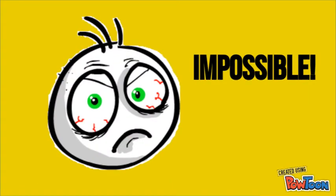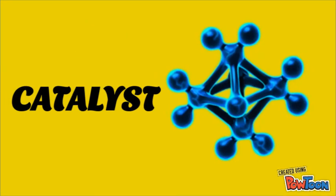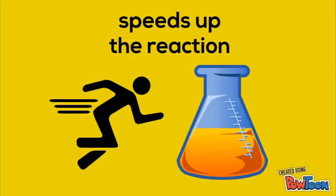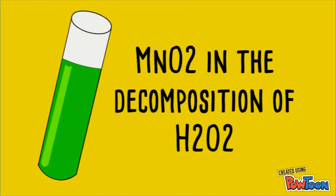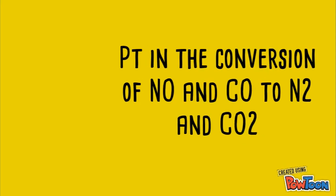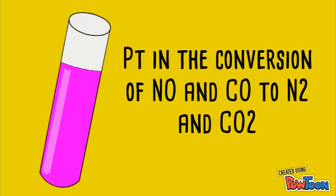At higher temperatures, particles collide more frequently and with greater intensity. Fourth, catalyst. A catalyst is a species that speeds up a chemical reaction without being chemically changed upon completion of the reaction. In other words, the mass of a catalyst is the same before and after a reaction occurs. Common examples of catalysts include MnO2 in the decomposition of H2O2, Fe in the manufacture of NH3, and Pt in the conversion of NO and CO to N2 and CO2.